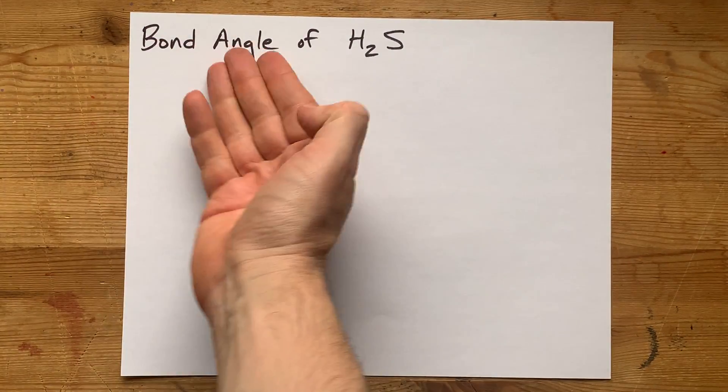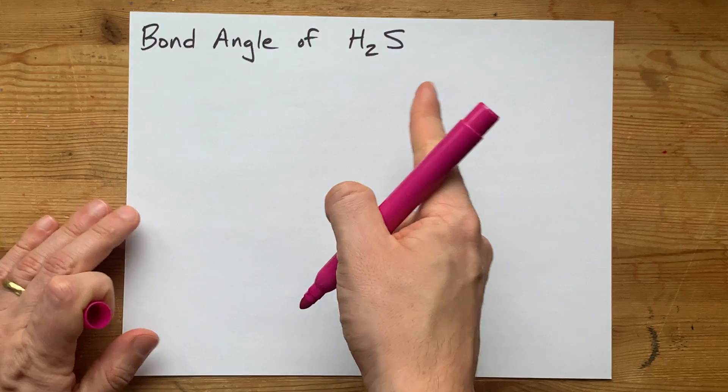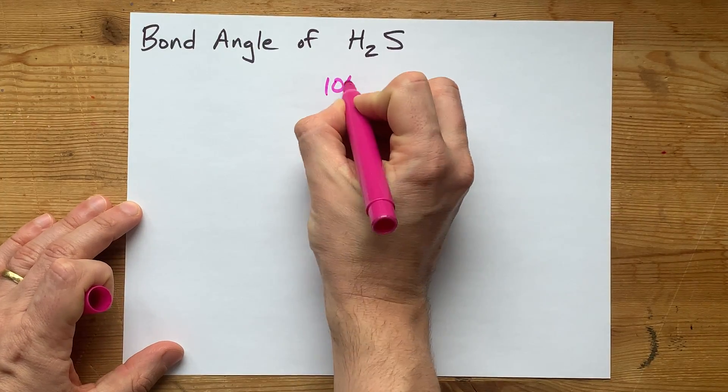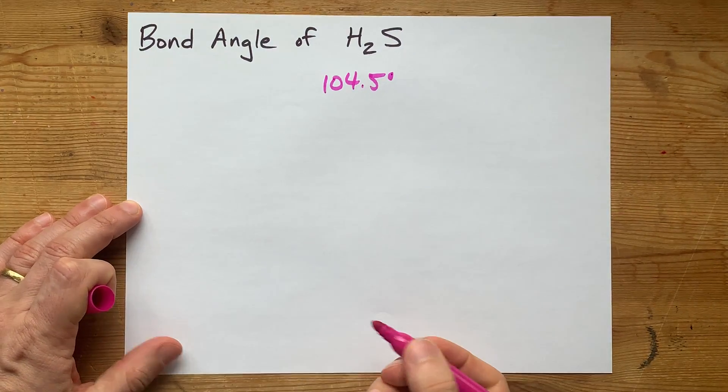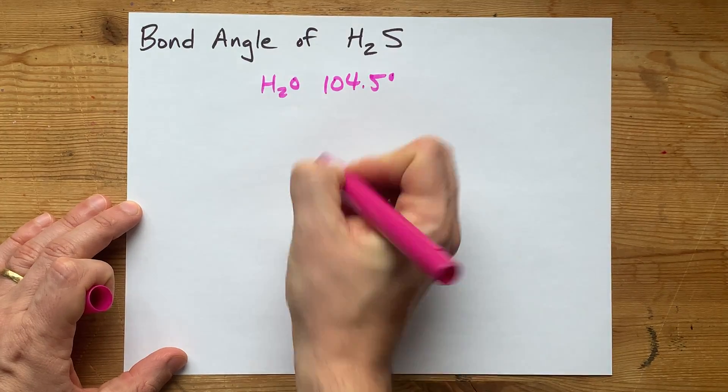A student asked me to predict the bond angle of H2S. My guess was going to be 104.5 degrees, which happens to be the bond angle for water.